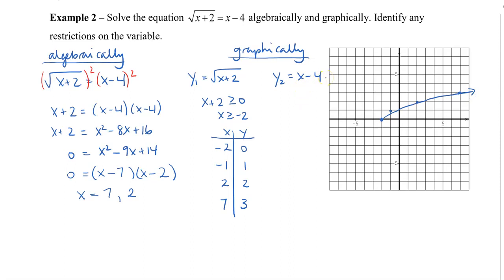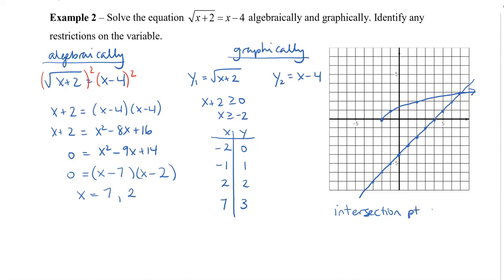To graph the line y2 equals x minus 4, I use slope 1 and y-intercept negative 4. Looking at my graph, I can see that the intersection point is at (7, 3). Since we're only looking for x, my x-value is 7. But algebraically I got both 7 and 2 — so let's do a check.